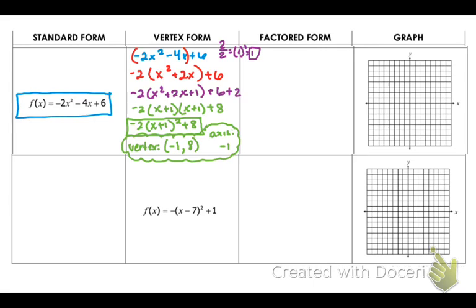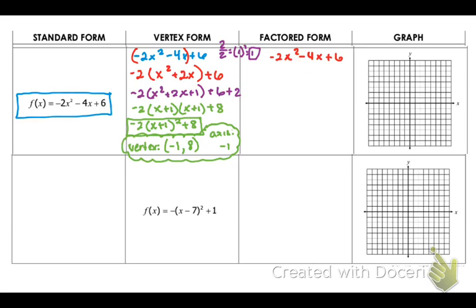Now let's move on to factored form. I'm going to go from standard to factored. Factored form is where you look at whether it's a perfect square, square root method, or factored method. I'm going to rewrite this as negative 2x squared minus 4x plus 6. Your a is less than 1, which means you have to factor something out to get a equal to 1. I'm going to take out a negative 2 — not just a 2, because that would leave the leading term negative. So: negative 2 times (x squared plus 2x minus 3), and now a equals 1.